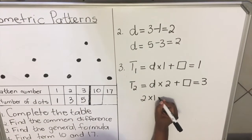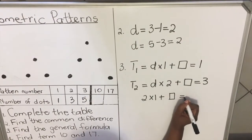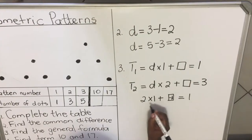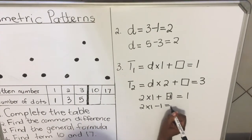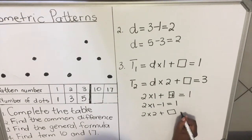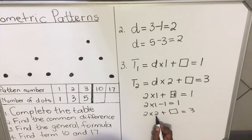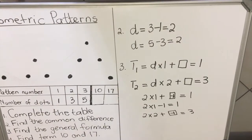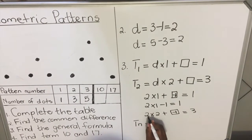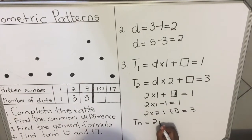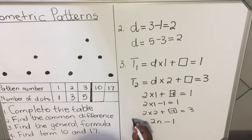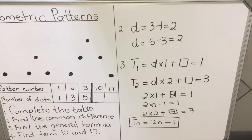Our common difference is two. So: two times one plus some number must equal one. Two times one is two; two minus one gives one — so the number is negative one. Check with term two: two times two minus one equals four minus one equals three. Correct! So the general term is Tn = 2n − 1.